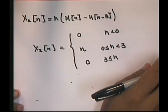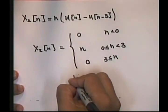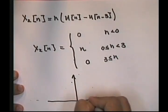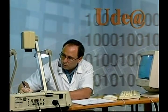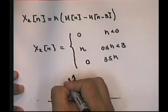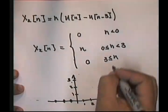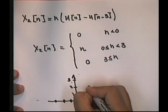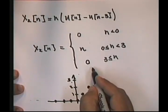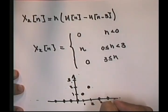Esta sería la función x sub 2 de n y su gráfico sería el siguiente. Para las n que son menores que 0, la función vale 0. Si n es mayor o igual que 0 pero menor que 3, la función vale el mismo valor de n; por tanto, para 0 vale 0, para 1 vale 1, y para 2 vale 2. Y ya si n es mayor o igual que 3, la función vuelve a tomar los valores de 0. Este sería el gráfico de esta función expresada utilizando la función escalón unitario.